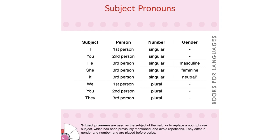Kita ulang sekali lagi: I, You, He, She, It, We, You, They. Yang singular atau orangnya hanya satu orang itu: I, You, He, She, It. Yang plural — We, You, They — orangnya lebih dari satu. Ini harus selalu diingat karena kita akan gunakan subjek ini selalu untuk membuat kalimat dalam bahasa Inggris.